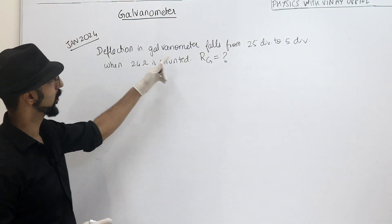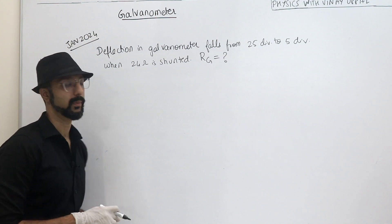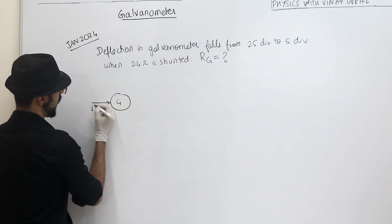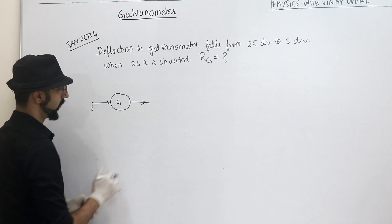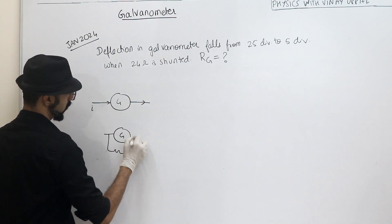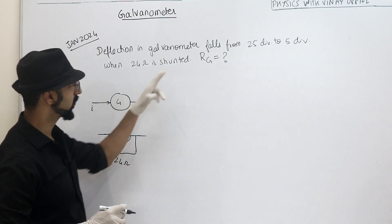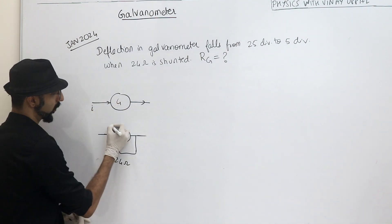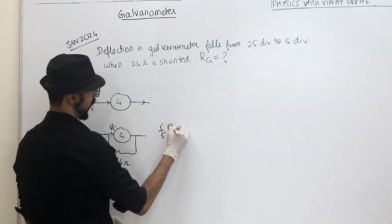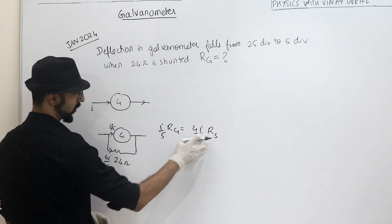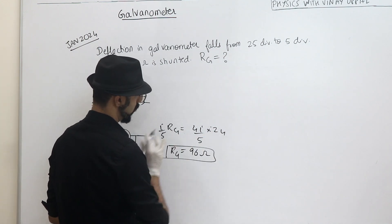Let's look at another question from JEE. Deflection in a Galvanometer falls from 25 divisions to 5 divisions when a 24 ohm shunt is connected. Find the resistance of the Galvanometer. Initially current I gives 25 divisions; after shunting, current through the Galvanometer is I/5 (one fifth), giving 5 divisions, and the remaining 4I/5 flows through the shunt. Equating voltages: (I/5) × RG = (4I/5) × 24, so RG = 4 × 24 = 96 ohms.